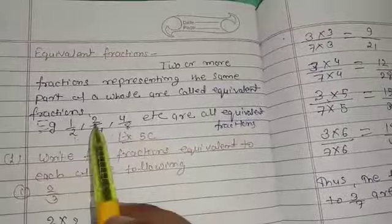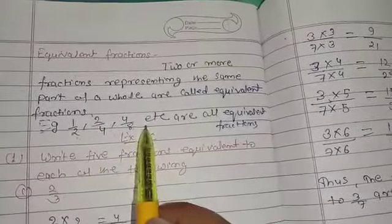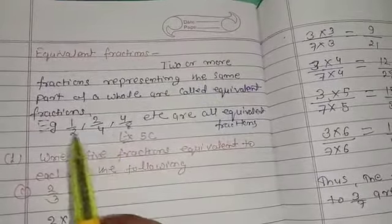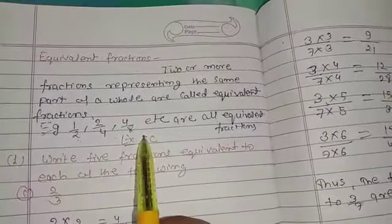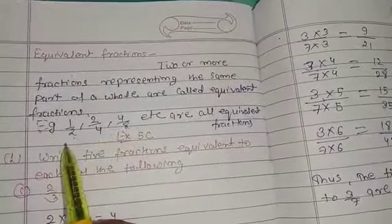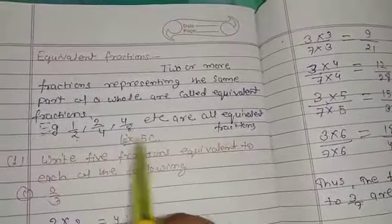Because 1 upon 2, 2 upon 4, 4 upon 8 represent half portion of the whole. All of these half portions represent the same part of the whole.